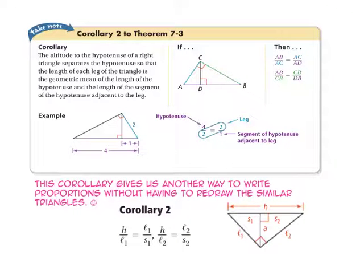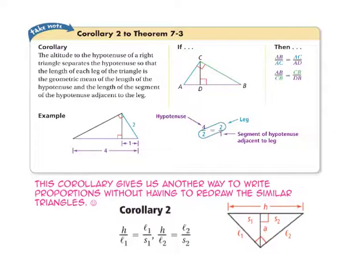Corollary 2 to theorem 7-3 says that the altitude to the hypotenuse separates the hypotenuse so that the length of each leg is the geometric mean of the length of the hypotenuse and the length of the segment of the hypotenuse adjacent to that leg. So for leg 1: H to leg 1 equals leg 1 to S1. And for leg 2: H to leg 2 equals leg 2 to S2.